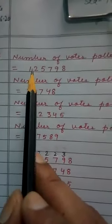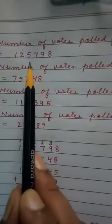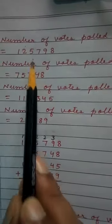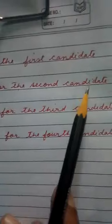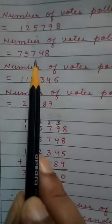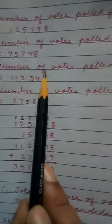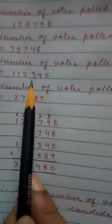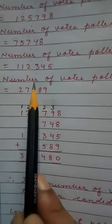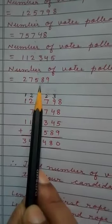Now here we will add number of votes polled for the first candidate, 1,25,798. Number of votes polled for the second candidate, 75,748. Number of votes polled for the third candidate, 1,12,345. Number of votes polled for the fourth candidate, 27,589.